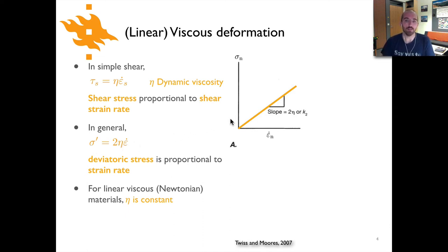We still have that linear relationship shown on the plot. The key thing for a linear viscous or Newtonian fluid—Newtonian is simply another name for linear viscous—is that this viscosity η will be a constant.